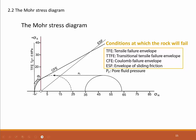The transitional tensile failure envelope forms a parabolic curve that hits the vertical shear stress axis at a certain point, sigma O, which we call the cohesive strength. At that cohesive strength point on the shear stress axis begins the Coulomb failure envelope — a linear envelope with a slope of usually around 30 degrees, a little shallower than the envelope of sliding friction, which is a straight line through the origin of the Mohr stress diagram.